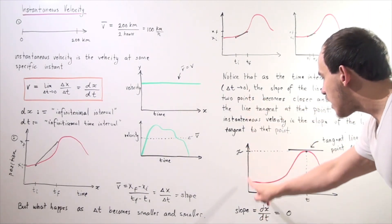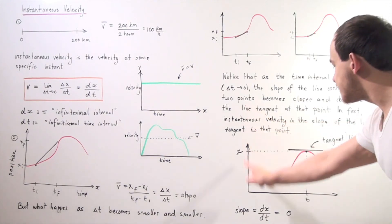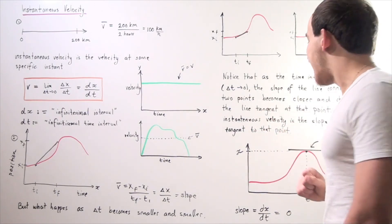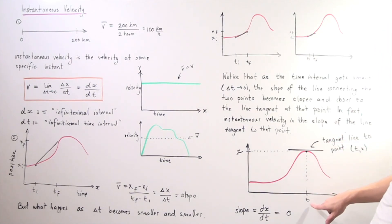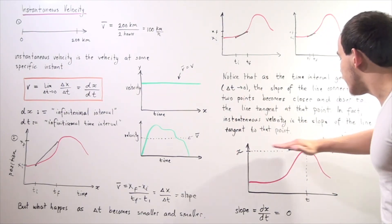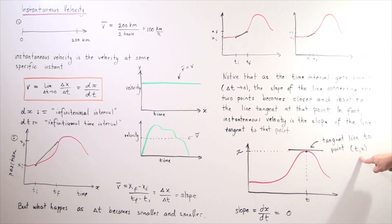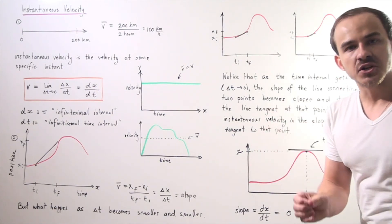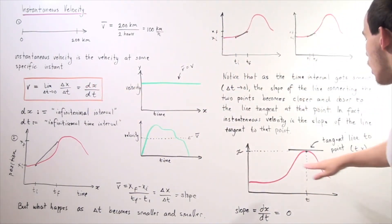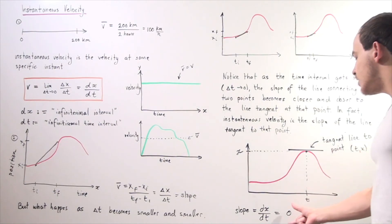Let's look at this example. We have our x-axis and y-axis — our position and our time. This is our function, and we want to find what the instantaneous velocity is at this point, t and x. To find my instantaneous velocity, I draw a line tangent to this point. This is my tangent line to the point t, x. Notice that this tangent line has a slope of zero, so that means my slope — which is the same thing as the derivative of this function at this point — is equal to zero.